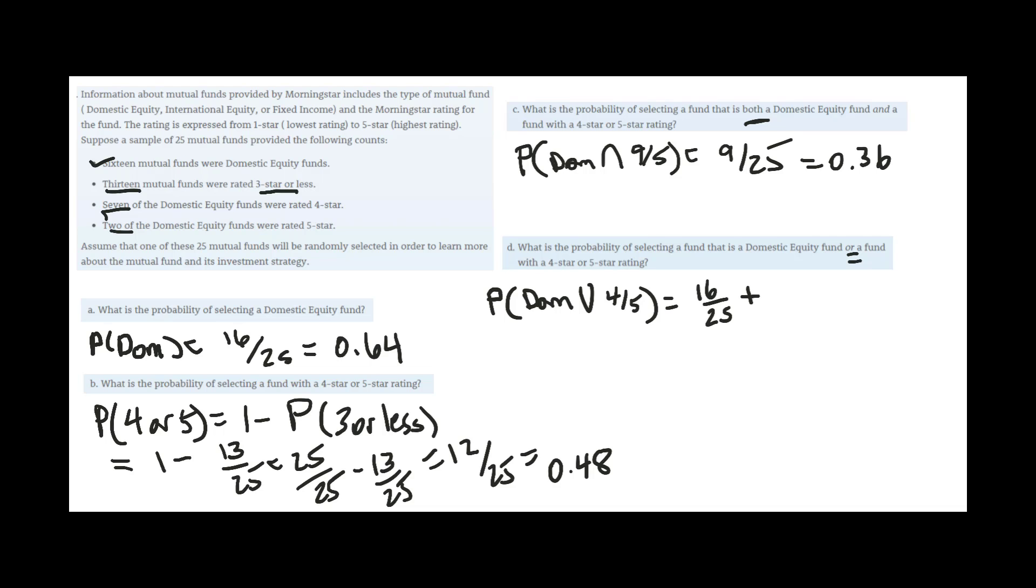Plus the probability, the 4 or 5, well that was the second part, the 12 over 25. And then you have to subtract out our last part C, the intersection, because that's overlapping. And I get 0.76.